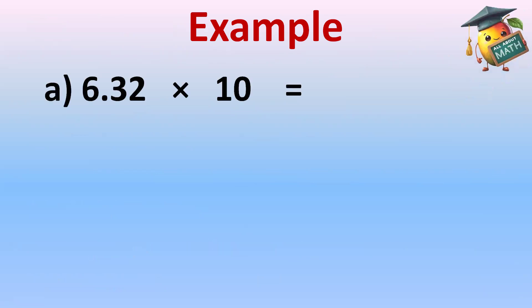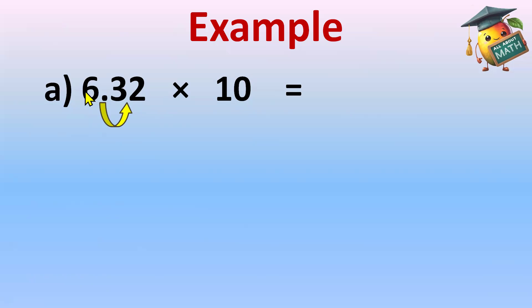For example, we have 6.32 and we multiply it by ten. In ten there is only one zero, so the decimal point will be shifted to the right side by one digit. The answer will be 63.2.